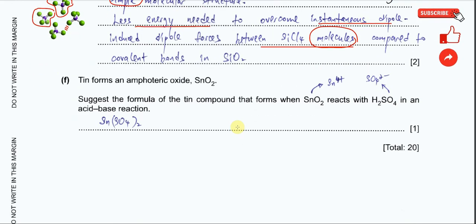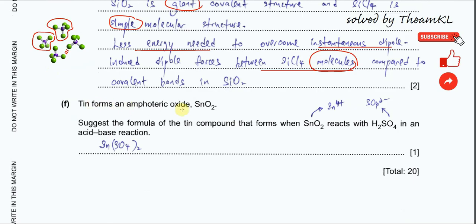Part F. Tin forms an amphoteric oxide — SnO₂. Suggest the formula of the tin compound formed when SnO₂ reacts with H₂SO₄. The oxidation state of tin in SnO₂ is +4, meaning the tin cation has a charge of 4+. Sulfate has a charge of 2−. When these two ions combine, two sulfate ions are needed to balance tin's 4+ charge, giving the formula Sn(SO₄)₂.